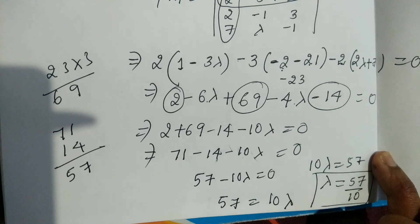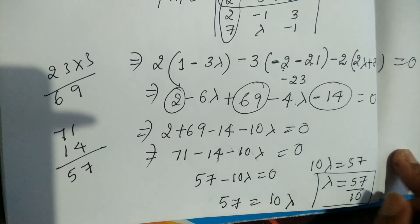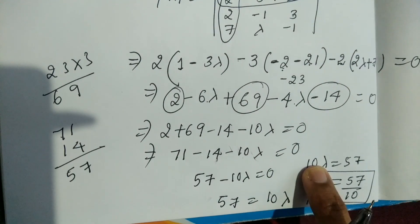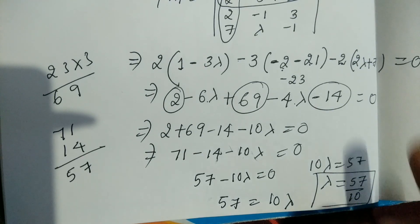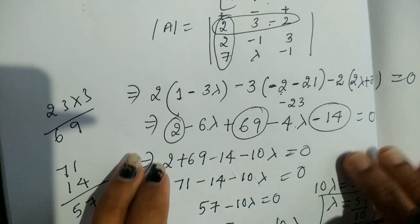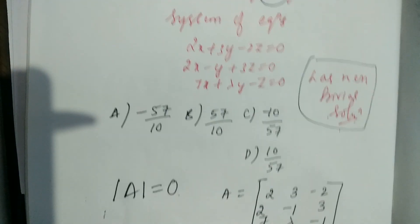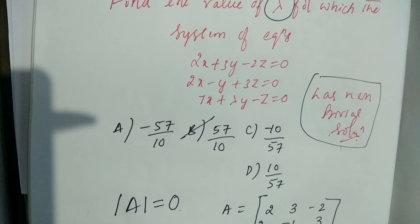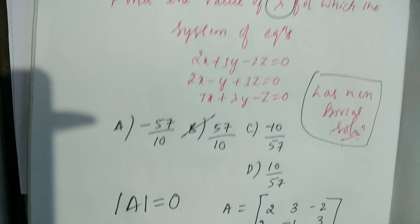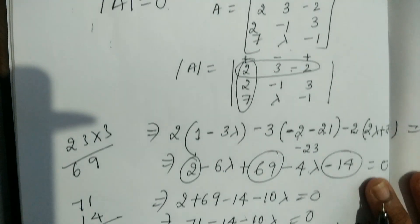Therefore, option B — lambda equals 57 by 10 — is correct, and this question carries 2 marks.